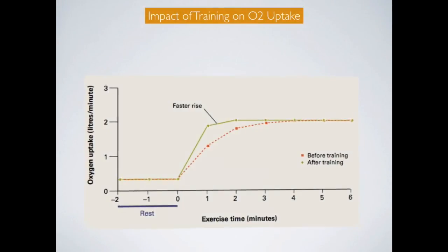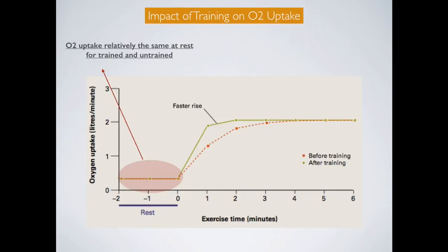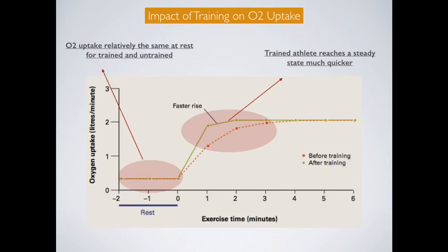In this graph, the impact of training on oxygen uptake is fairly clear. Oxygen uptake is relatively the same at rest for trained and untrained athletes. However, the trained athlete's line shows a much faster rise at the beginning of exercise, meaning the athlete reaches a steady state much quicker. The trained athlete is able to utilise a greater amount of oxygen more quickly to reach that steady state of oxygen supply to the muscles, whereas the untrained athlete shows a far more gradual rise.